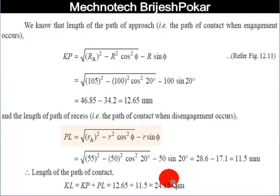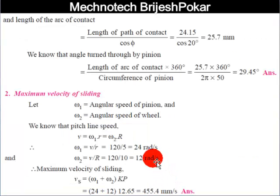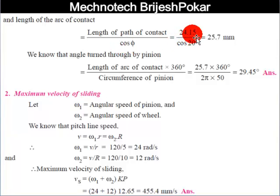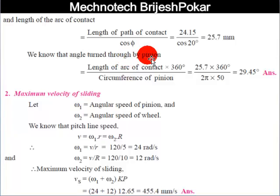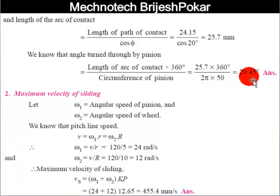After finding KL, the length of arc of contact = KL / cosφ = 24.15 / cos20° = 25.7 mm. Now substituting into the angle equation: angle turned through by pinion = (25.7 × 360°) / (2π × 50) = 29.45 degrees. That is the angle turned through by the pinion when one pair of teeth is in mesh.